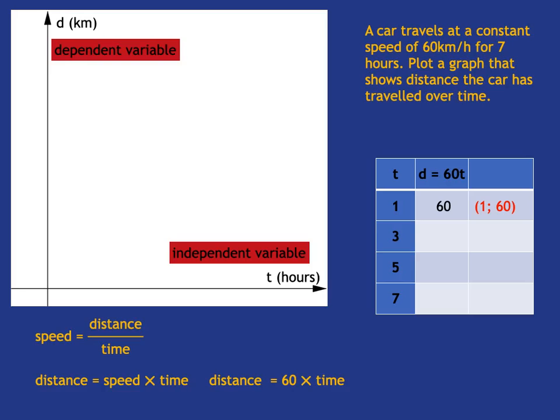So let's go with time is 3. Then your distance will be 60 times 3, which is 180. So my point is 3, 180. For time is 5, you're going to have 60 times 5, which is 300. And for 7, you're going to have 60 times 7, which is 420. And so you're going to get the point of 7, 420.